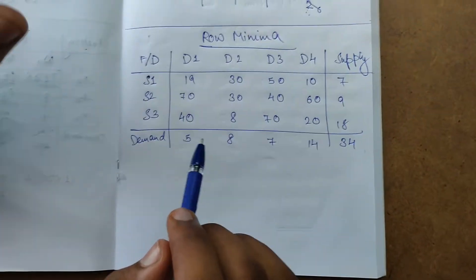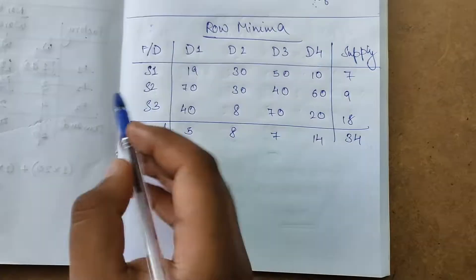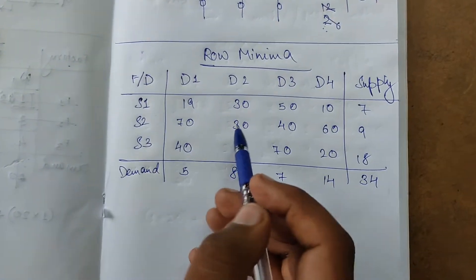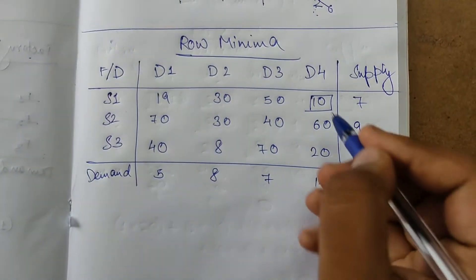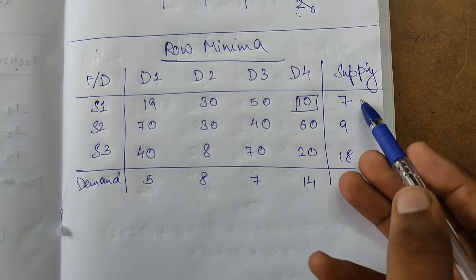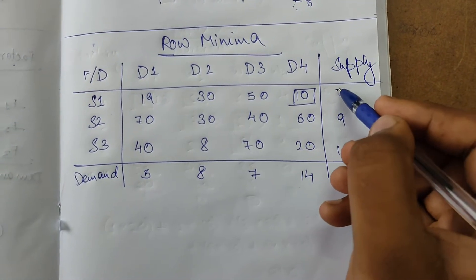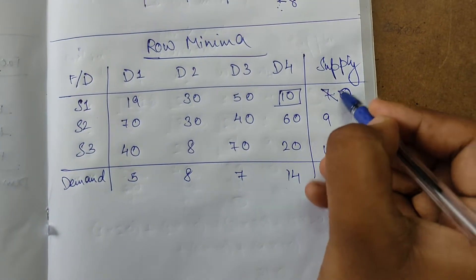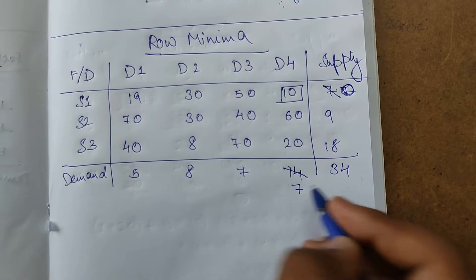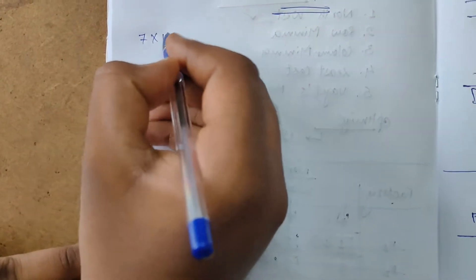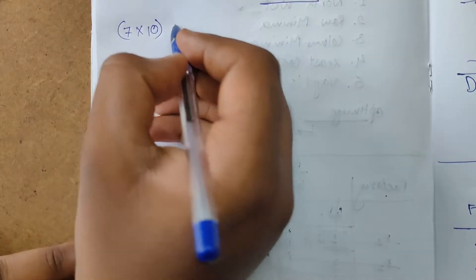Row minima, we will iterate row by row. First row S1, least element is 10. Demand is 14, supply is 7, so 7 is the least. 7 minus 7 is 0, and 14 minus 7 is 7. Solution is 7 into 10, plus.